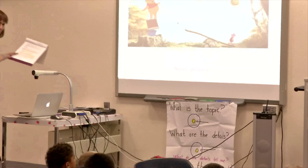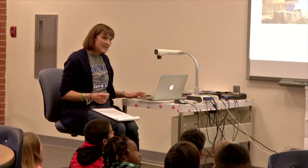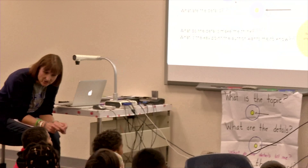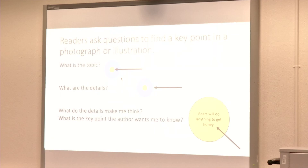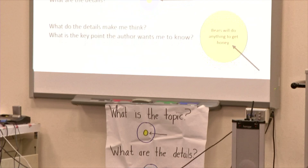When a writer shares information on a topic — like bears or tigers — he uses pictures and words to teach us something. He has a point he wants you to remember. Your teachers have probably told you to ask, 'What is the author want me to remember?' The point is what he wants you to remember. One way to figure out the writer's point is to ask some questions.